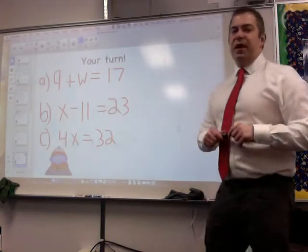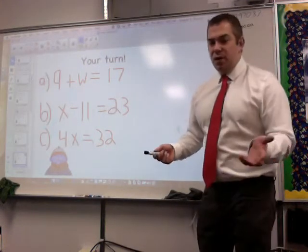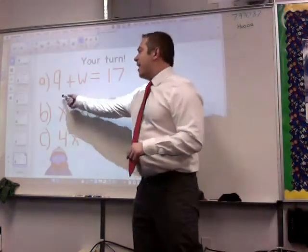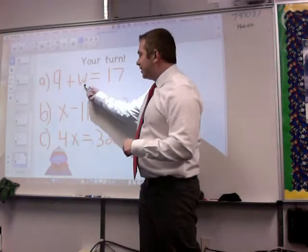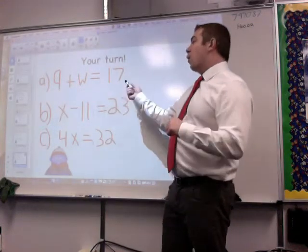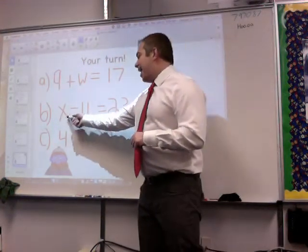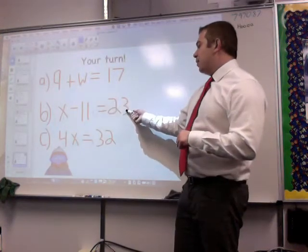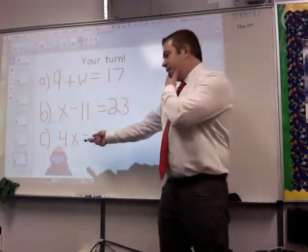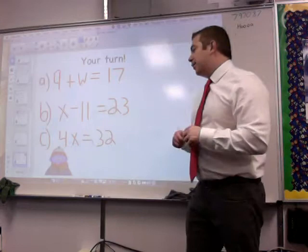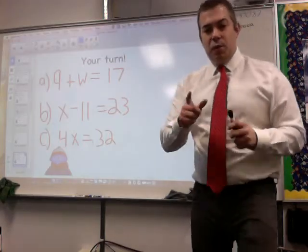Now here's your turn. Not too hard stuff today. 9 plus w equals 17. You can guess and check, or I think the better method is if a plus b equals c, then 17 minus that will equal that, or you could also do 17 minus 9 will equal that. If x minus 11 equals 23, then 23 plus 11 will equal x. Same thing down here: 4 times x will equal 32. I'm going to let you figure that one all out on your own. Bring this tomorrow and I'll see you when I see you.